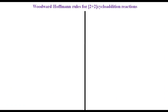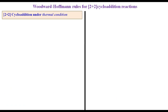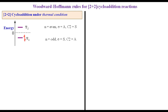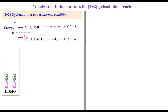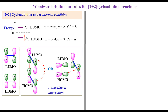Now let us derive the Woodward-Hoffmann selection rule for 2+2 cycloaddition reaction. In ethylene, there are two pi molecular orbitals, ψ1 and ψ2. Under thermal conditions, ψ1 is fully occupied by two pi electrons and ψ2 is fully vacant, so ψ1 acts as HOMO while ψ2 acts as LUMO. During cycloaddition, the HOMO of one ethylene molecule combines with the LUMO of the other. Since HOMO and LUMO have two different symmetries, the allowed bonding interaction will be antarafacial, which is not possible in small ring systems like cyclobutane. So, 2+2 cycloaddition is thermally not allowed.